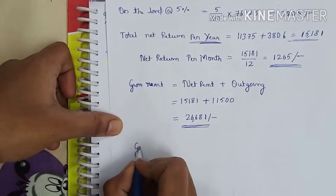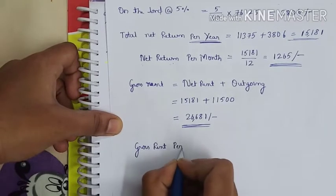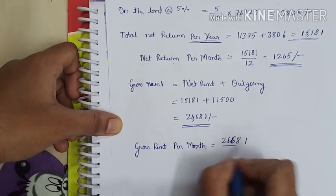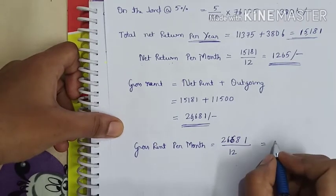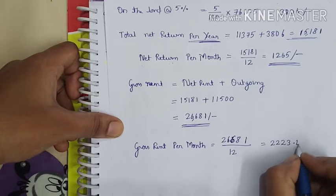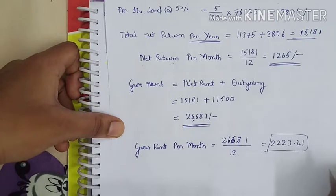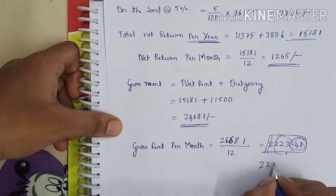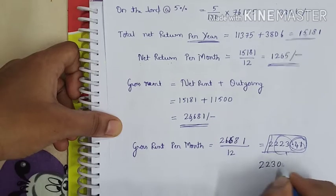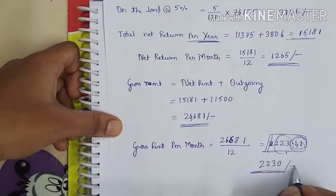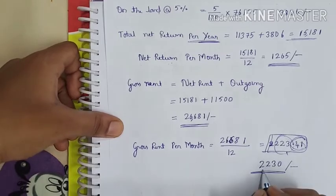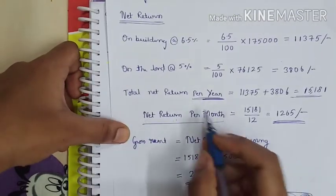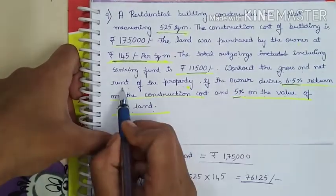Now we calculate the gross rent per month: 26,681 divided by 12 equals 2,223. Since money values cannot be expressed as fractions, we round it off to 2,230. So we have calculated the gross rent per month and net rent per month — these were the two things asked in the question: work out the gross and net rent of the property.